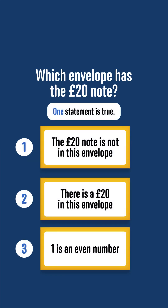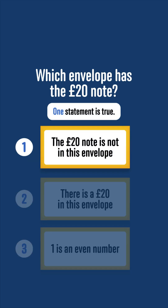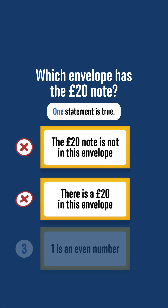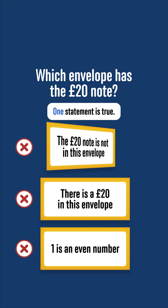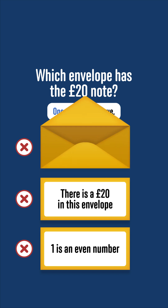Suppose the 20-pound note is in envelope 1. Then the statement on envelope 1 would be false. The statement on envelope 2 is false too, because the 20-pound note is not in envelope 2. The statement on envelope 3 is always false, and so all three statements are false. We know that exactly one of the statements is true, so the 20-pound note can't be in envelope 1.